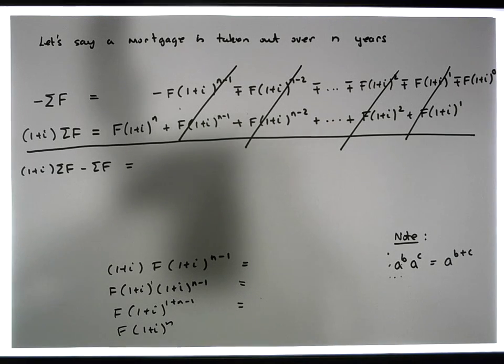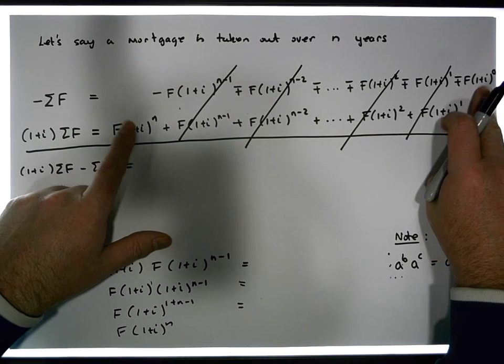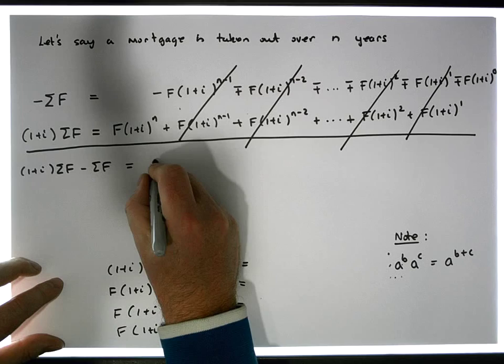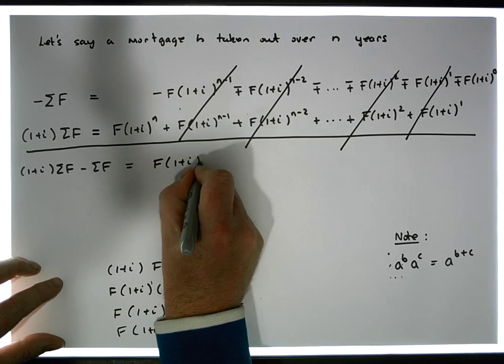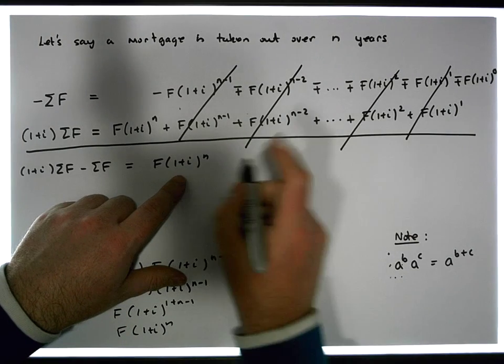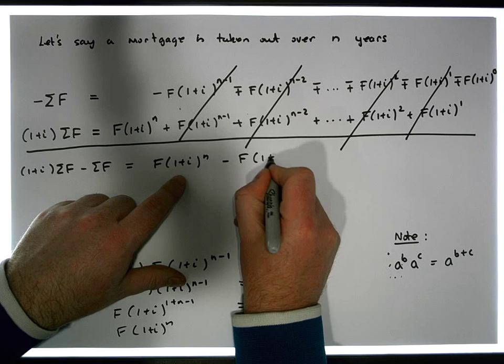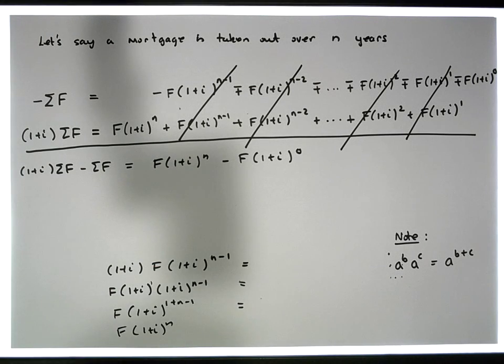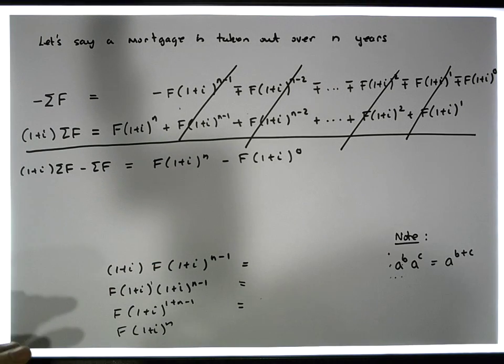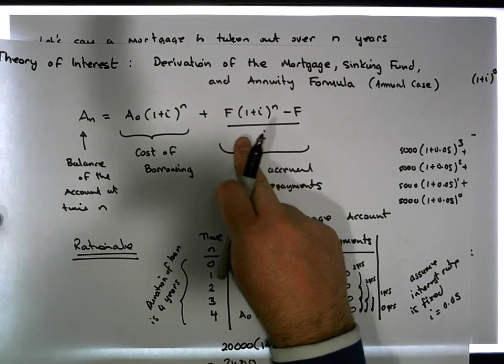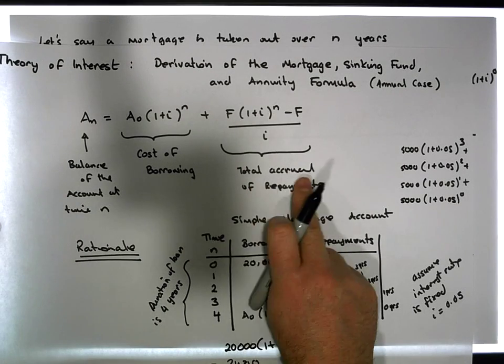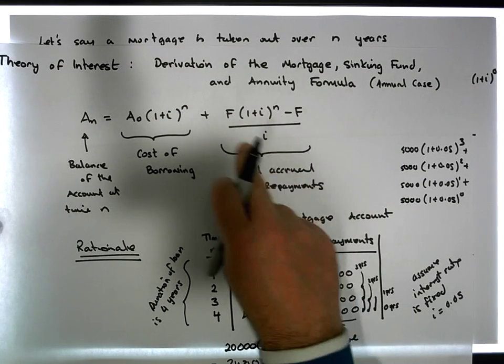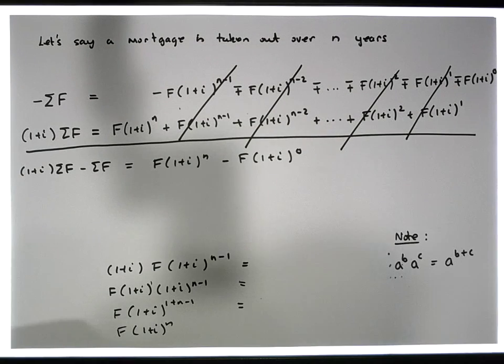So the only things that we're left with are these two. So we're left with F times one plus i to the n, minus F times one plus i to the zero. Now, we're nearly there. Don't forget what we're trying to get is something that looks like this, the total accrual of all repayments. We're trying to get this here. So how the hell are we gonna do this? Well,